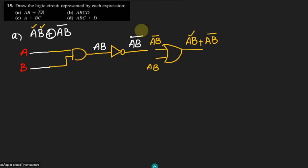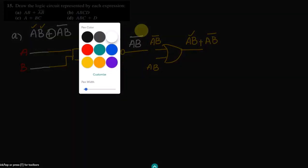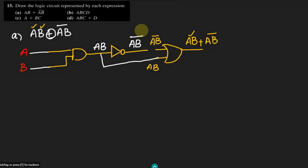So we have this signal here — yes it is already here — and that is basically this one, and similarly ab prime is also here and this is connected here and we will get this output. So that is the solution of part a. Similarly, for part b here we have abcd.